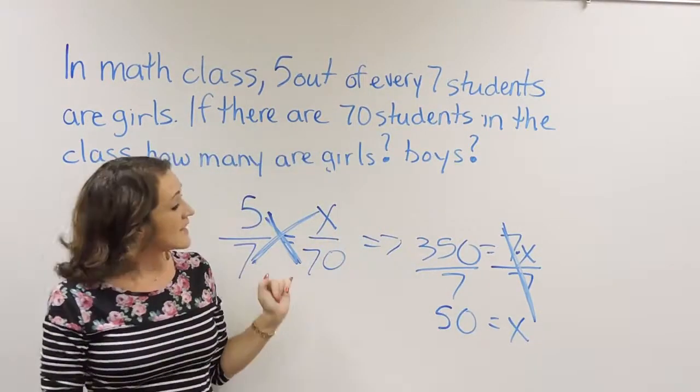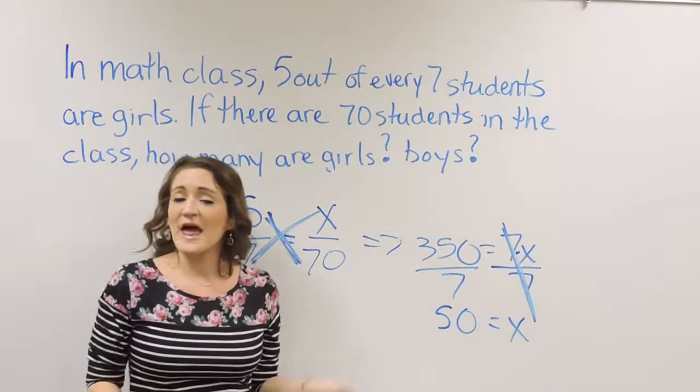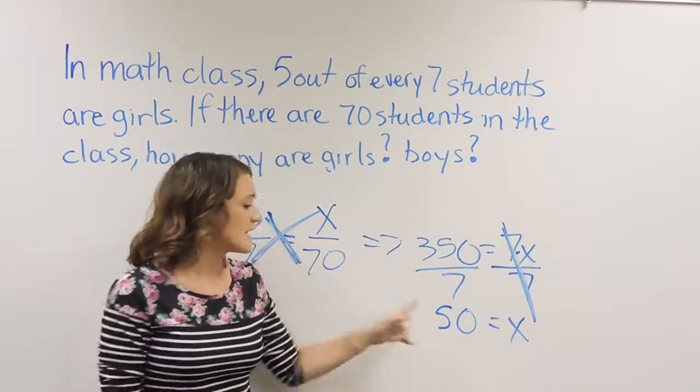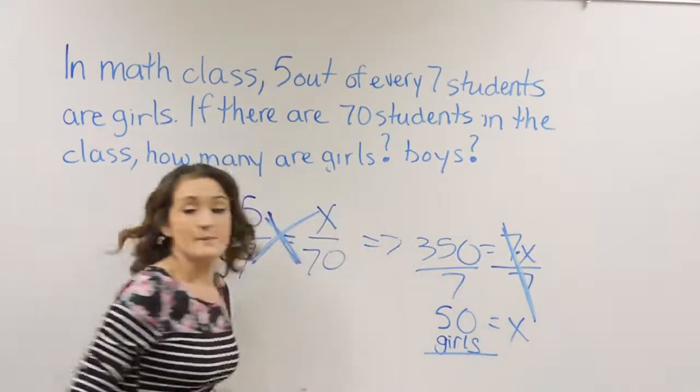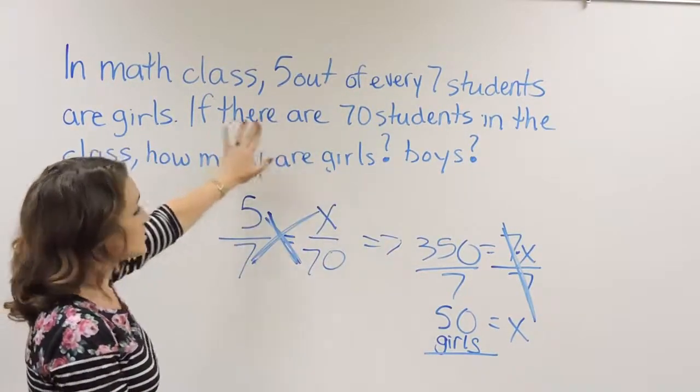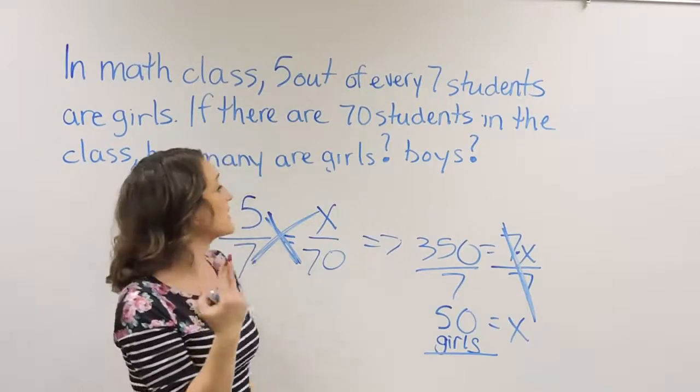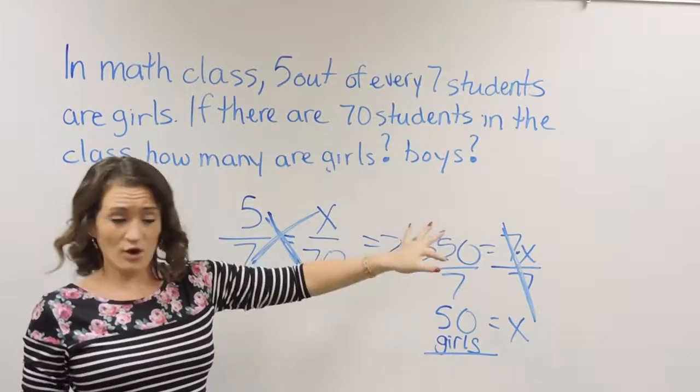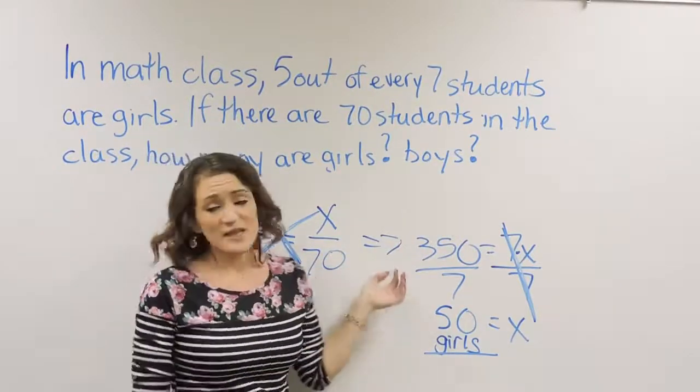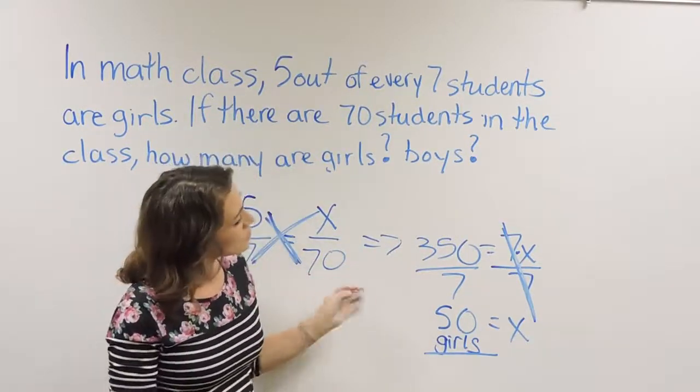What that represents is that if we had a class of 70 students, 50 of them would be girls. But let's go back to our question because we had a second part to it. It not only asked how many are girls, but also how many are boys.